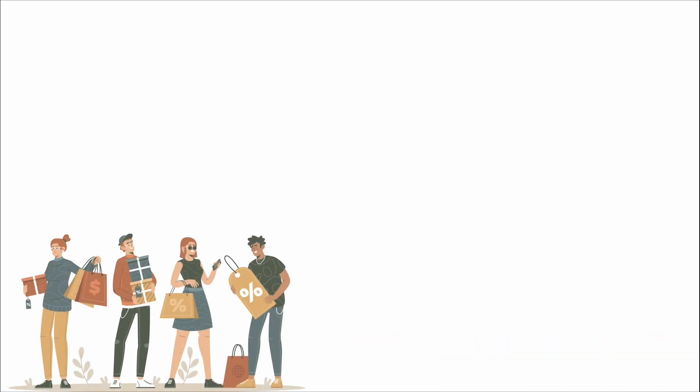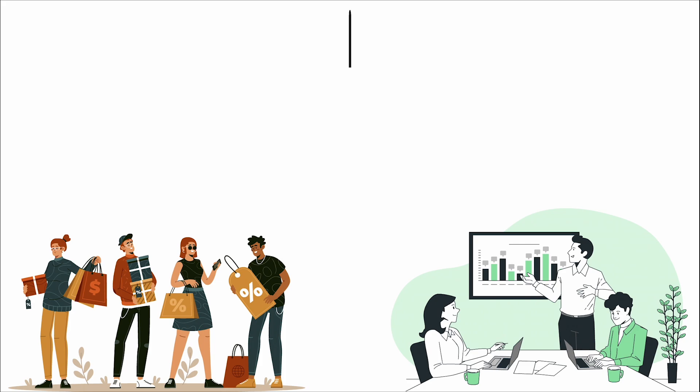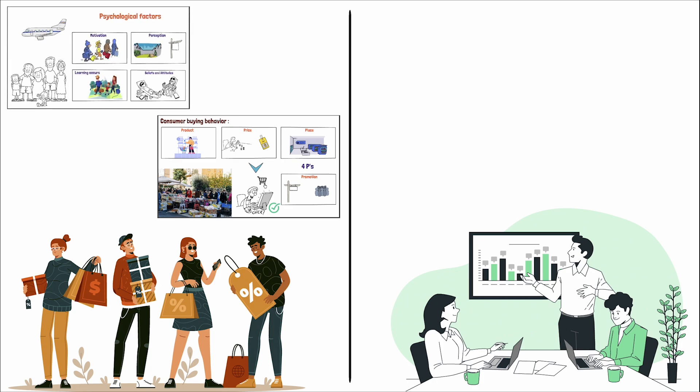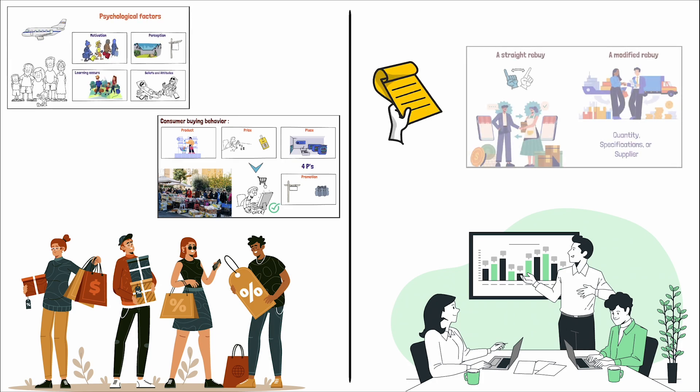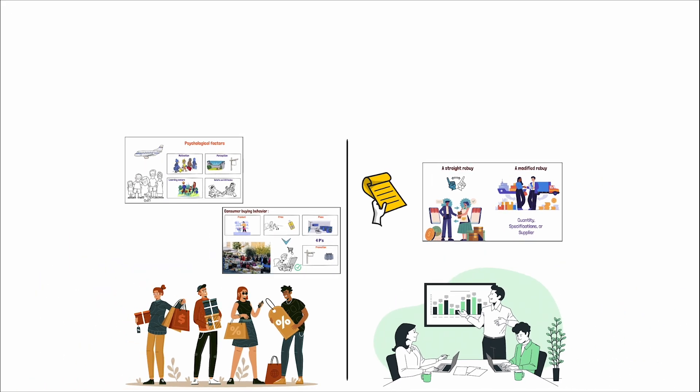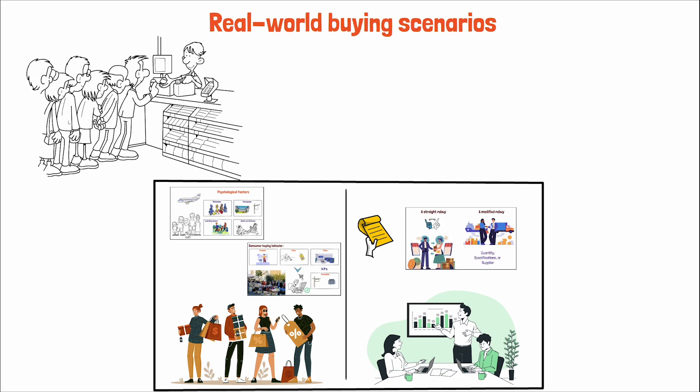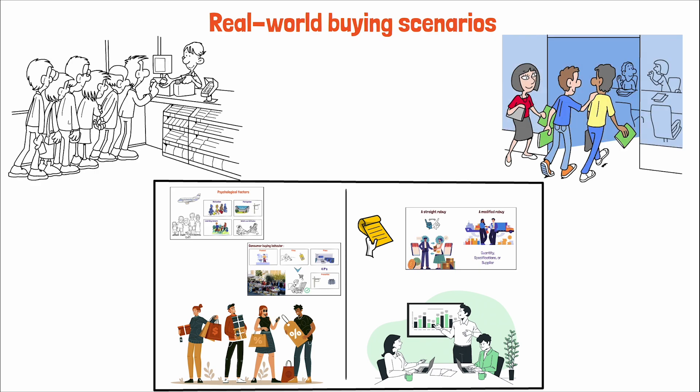Understanding consumer and business buyer behavior is a complex, dynamic endeavor. It requires a delicate balance of knowledge about the four Ps, the subtleties of psychological factors, and the specifics of the business buying process and various buying situations. Armed with this understanding, you're now better equipped to recognize the interplay of these elements in real-world buying scenarios. Whether it's identifying the social factors that sway consumer decisions or seizing the opportunity in a new task buying situation, you have the insights to navigate the marketplace with confidence.